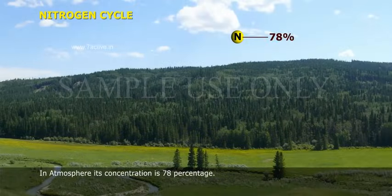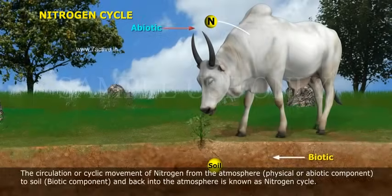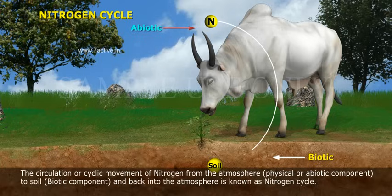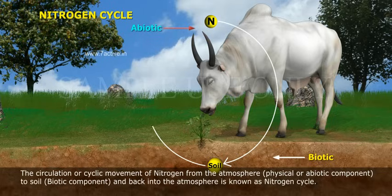In the atmosphere, its concentration is 78%. The circulation or cyclic movement of nitrogen from the atmosphere, the physical or abiotic component, to soil, the biotic component, and back into the atmosphere, is known as the nitrogen cycle.